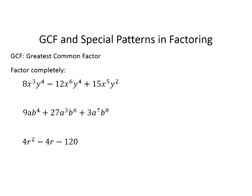In the first example, if we look at our number terms, we have an 8, a negative 12, and a positive 15. Think about the largest number that goes into all three. 1, 2, 4, and 8 go into 8. 1, 2, 3, 4, 6, and 12 go into 12. But for 15, the factors are just 1, 3, 5, and 15. So there's no number that can go into all three evenly — they have a GCF of 1. There's nothing we can factor out of the number terms.